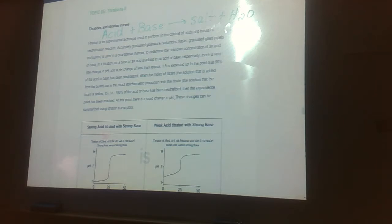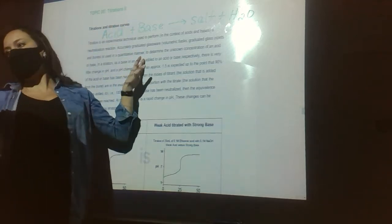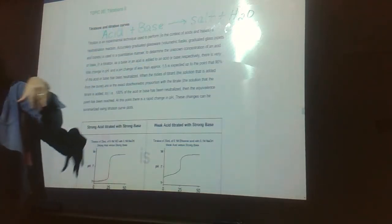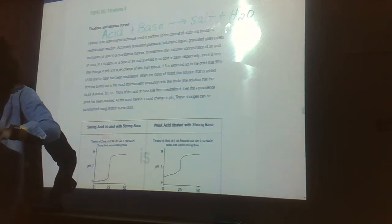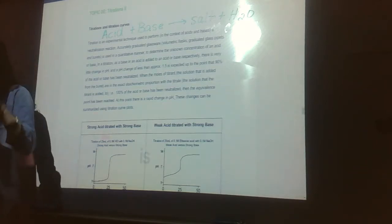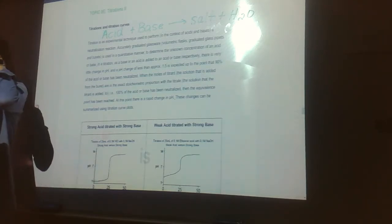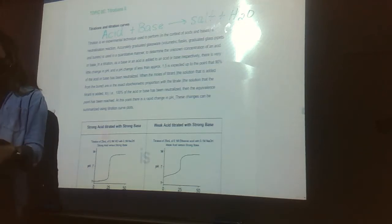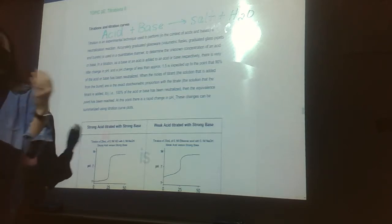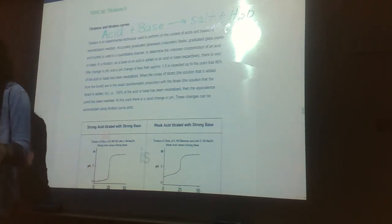Up until this point, we were always adding a strong acid and a strong base, like hydrochloric acid and sodium hydroxide, and we were winding up right in the middle with a pH of 7, literally just salt water. Now that we know things about weak acids and weak bases, we can do titrations where we do not wind up at a pH of 7.